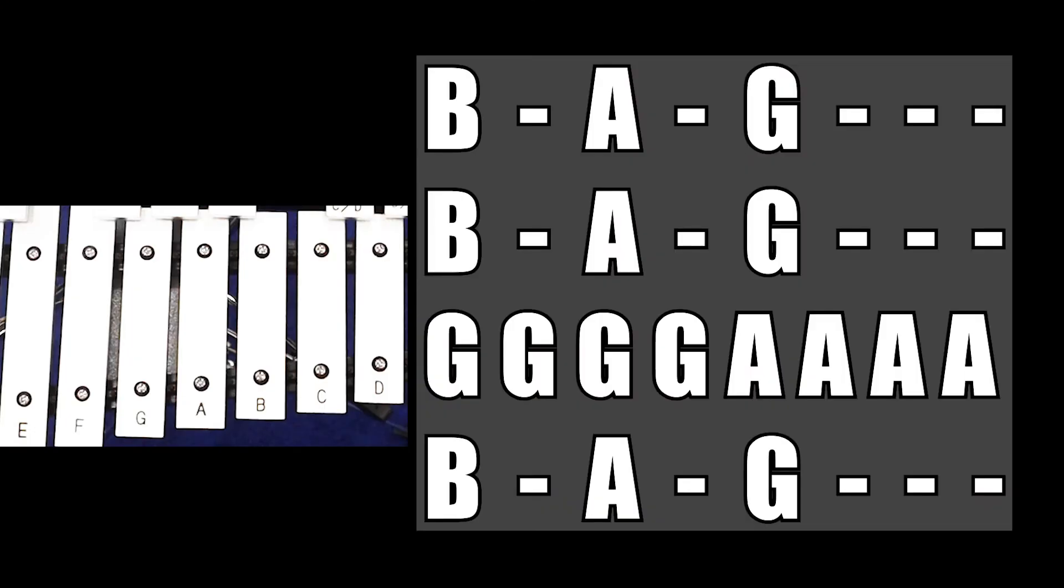Let's put the whole thing together now. So it's B, A, G. B, A, G. And then we have the four G's, the four A's, and we finish up with one more B, A, G. We're going to play it together.